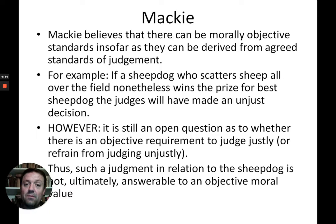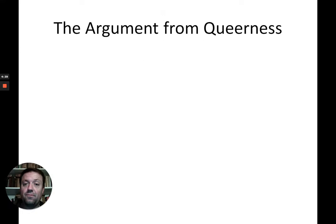This is Mackie's point: it is still an open question as to whether there is an objective moral requirement to judge justly or to refrain from judging unjustly. He doesn't believe there is such an objective requirement, and so ultimately there is not a realm of moral facts and no objective moral value. To augment and strengthen this argument, he develops what is called the argument from queerness.